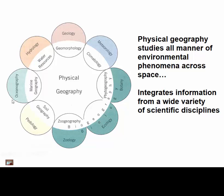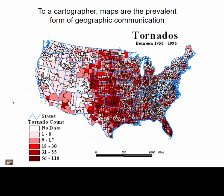You can see some of these intersections as we look closer to physical geography — whether it's biogeography, soil geography, or water source geography versus hydrology. To a cartographer and geographer, maps are a prevalent form of geographic communication, as you can see in this example here.